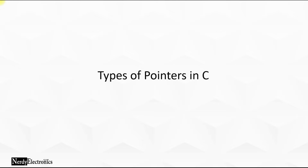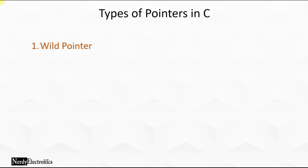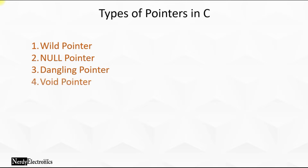Hello and welcome back. We have seen how to use pointers in C. Let us now see the different types of pointers that we have in C. So the first type is the wild pointer. Then we have a null pointer, then a dangling pointer and a void pointer. Let's see them one by one — what they mean and what they do.